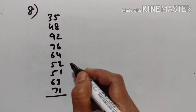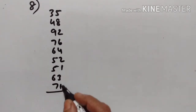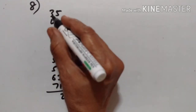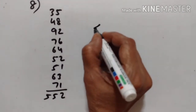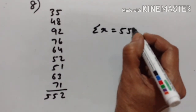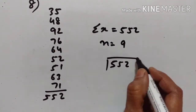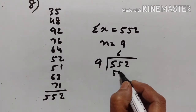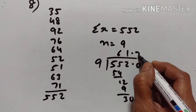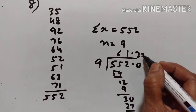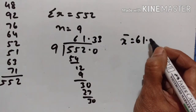8th problem: find the mean and median of the data. If we add this, we get 552. So sum is equal to 552. n is equal to 9. 552 divided by 9 — 9 sixes are 54, 9 threes are 27, and 3 remains, so it is recurring. Mean is equal to 61.33.